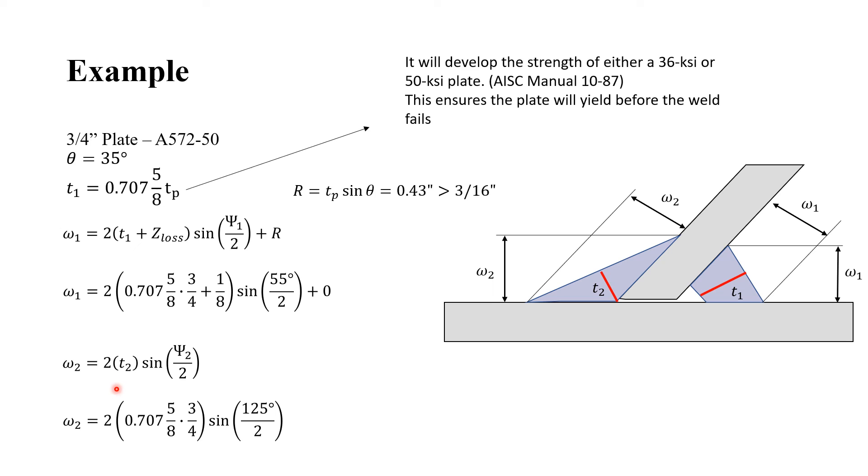And for the other side, we have two times T2, which is 0.70758 of 3/4 inch. We don't have a z-loss on this side. And 180 minus 35, which is 145 degrees divided by 2. So this will give me 0.42 inches for the right and 0.587 inches for the left. And we're gonna have 7/16 inch and 5/8 inch for the welding.